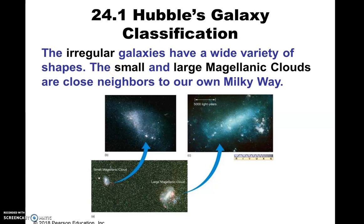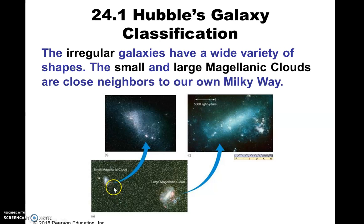This is the last of the three main types of galaxies. In Hubble's original classification scheme, these are called irregular galaxies. There are two examples right on our doorstep, as it were. There are lots and lots of irregular galaxies out there in the universe, but these two are the nearest ones, and you can only see them in the southern hemisphere — you've got to cross the equator.